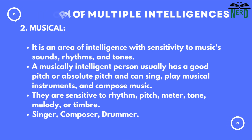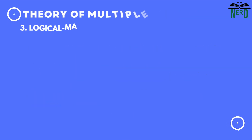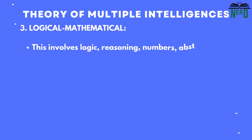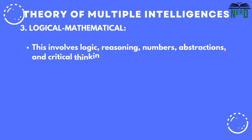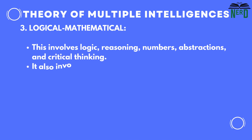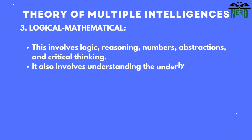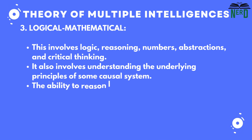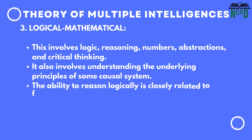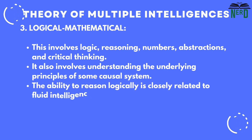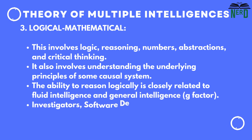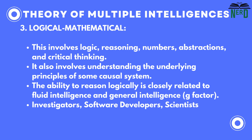Third is logical-mathematical. This involves logic, reasoning, numbers, abstractions, and critical thinking. It also involves understanding the underlying principles of some causal system. The ability to reason logically is closely related to fluid intelligence and general intelligence of the G-factor. They are investigators, software developers, and scientists.